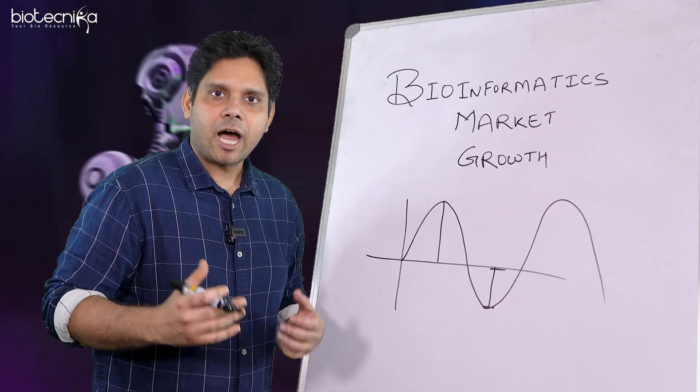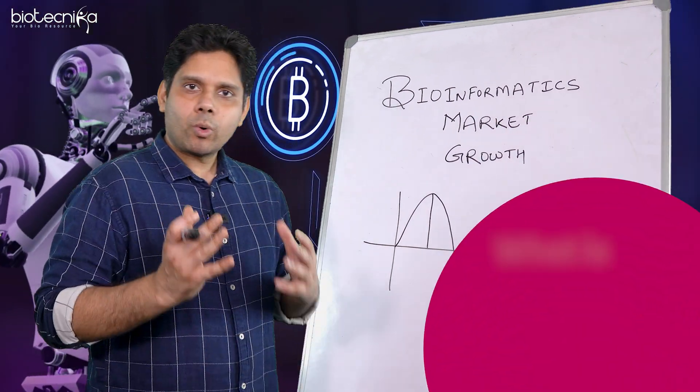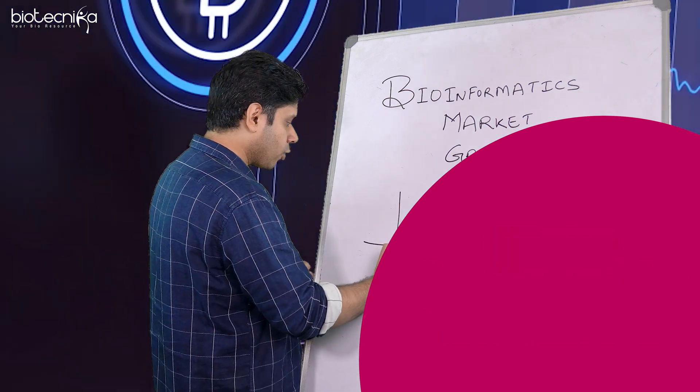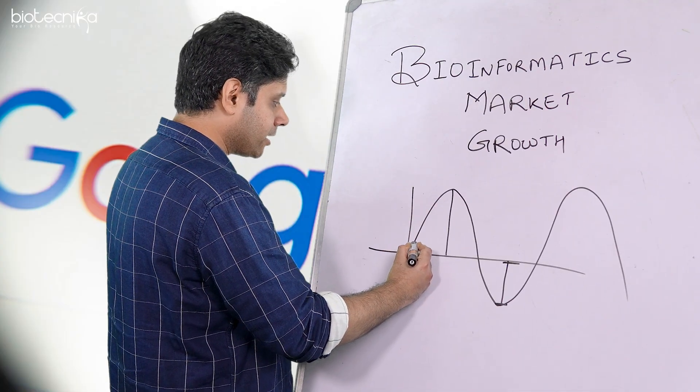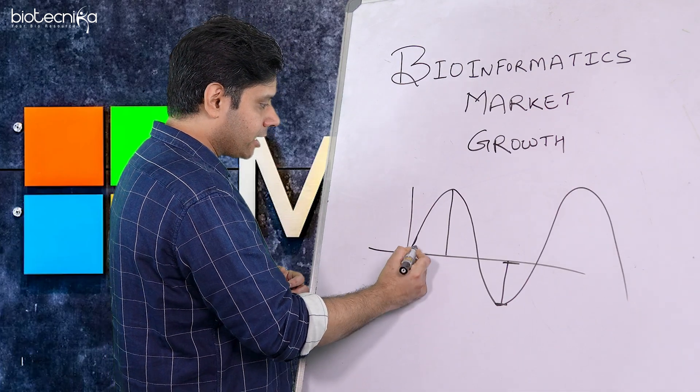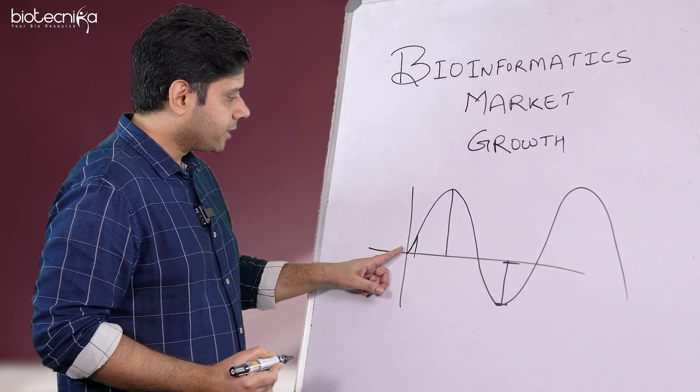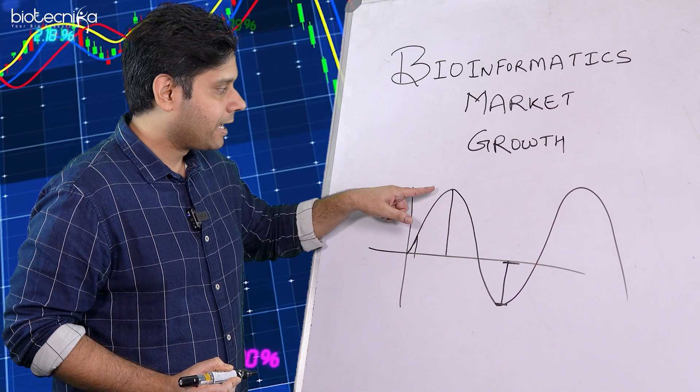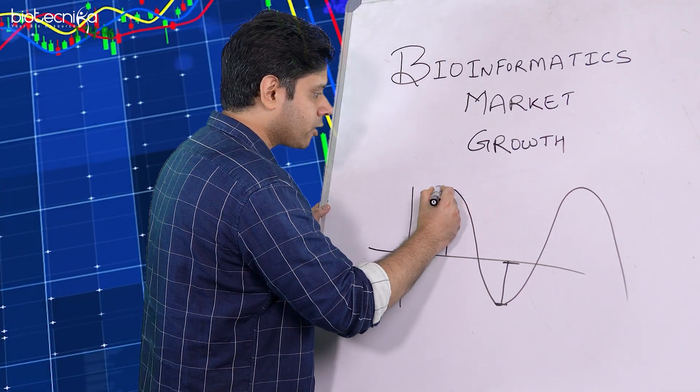So let us take example of the artificial intelligence market now. So what is happening in the artificial intelligence market? Right now we are seeing OpenAI and Google and Microsoft and all of that. So somewhere we are here. So this AI market is going to go up,